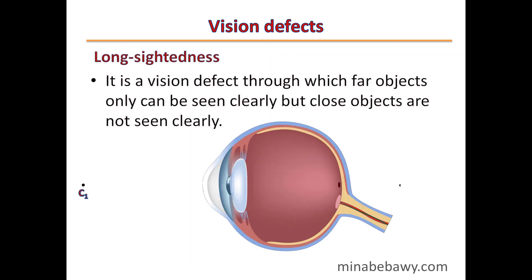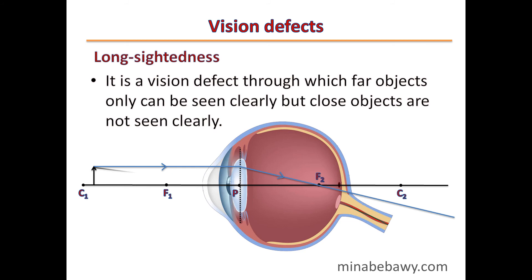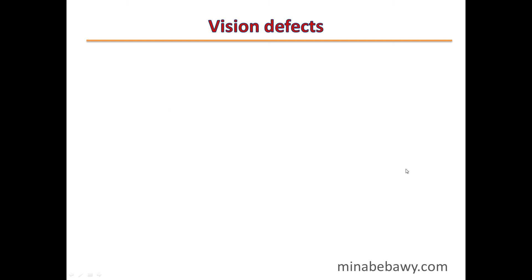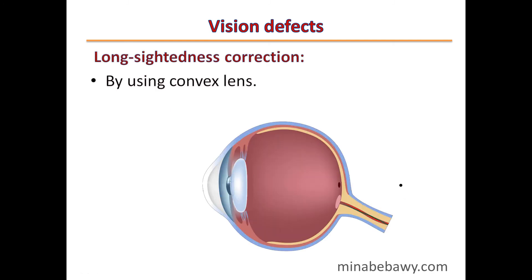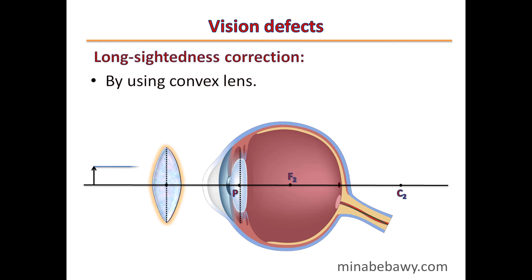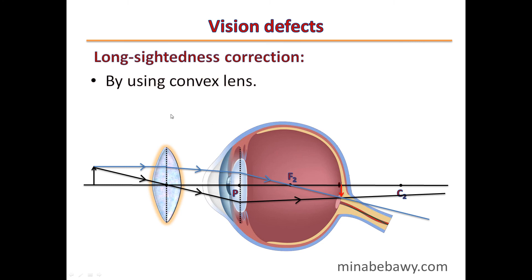Long-sightedness is a vision defect through which far objects can be seen clearly, but close objects cannot. This is because the image is formed behind the retina. Long-sightedness is corrected by using a convex lens to converge the light before it is further collected by the cornea, so the image is formed on the retina.